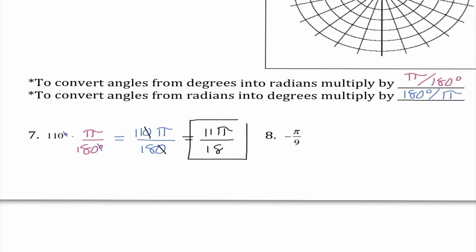On number 8, we have negative pi over nine. This is in radians because it does not have a degree symbol. We multiply by 180 degrees over pi. The pi's cancel out, and 180 divided by 9 is 20, so my answer is negative 20 degrees. So the four major topics we talked about today: graphing things in the correct quadrant, finding coterminal angles, our unit circle, and lastly converting angles from degrees into radians and vice versa. We are going to use these a ton this chapter.